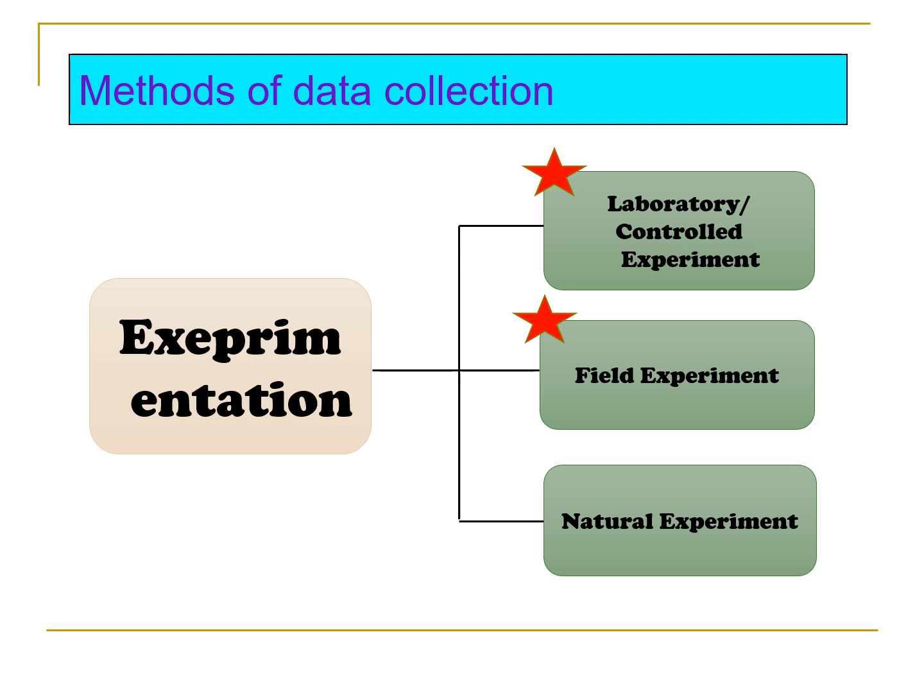The third experimentation is a natural experiment. Natural experiment is an empirical study where individuals are exposed to the experimental and control conditions that are determined by the other factors outside the control of the researcher.